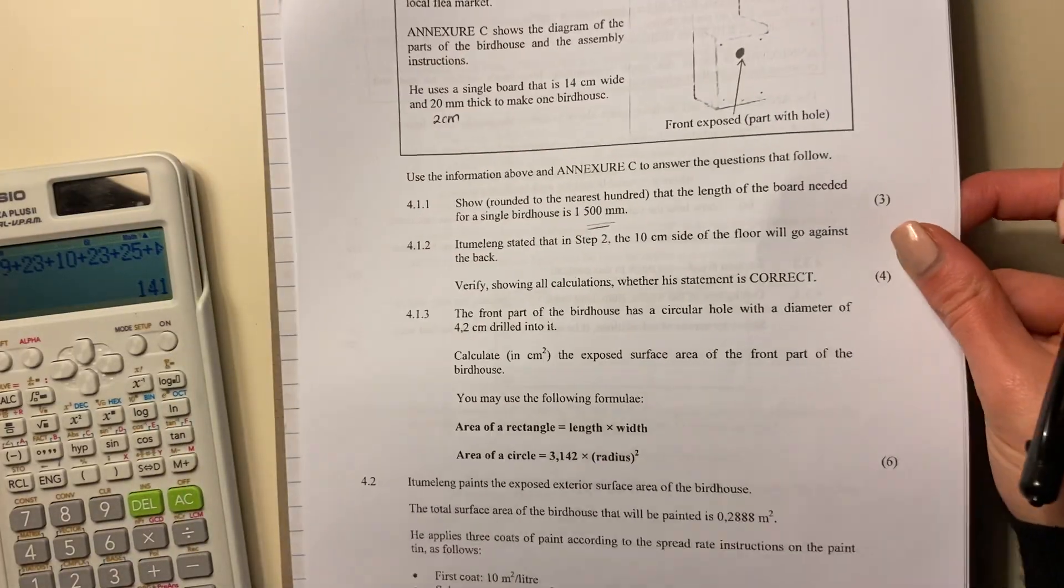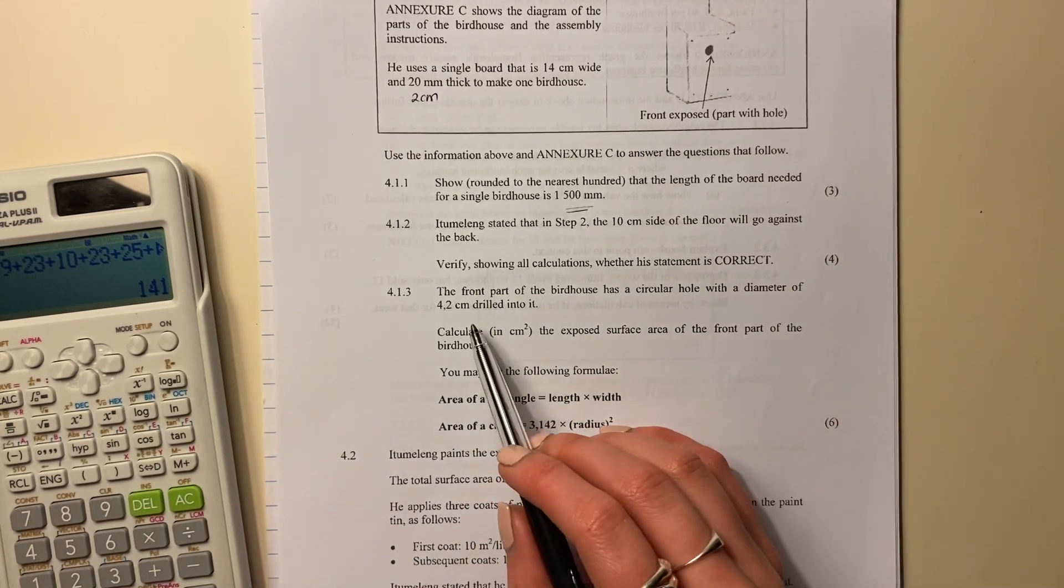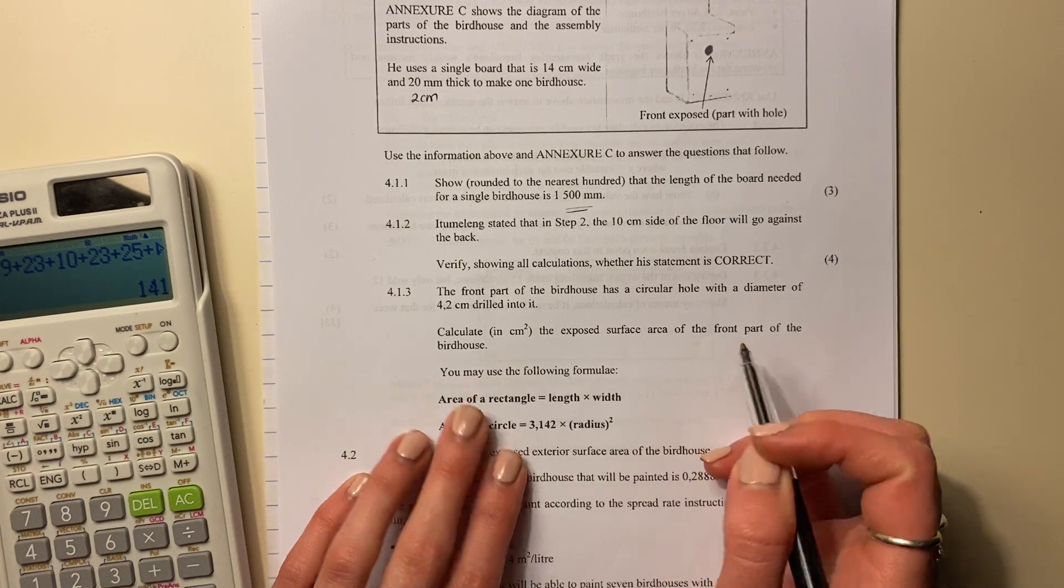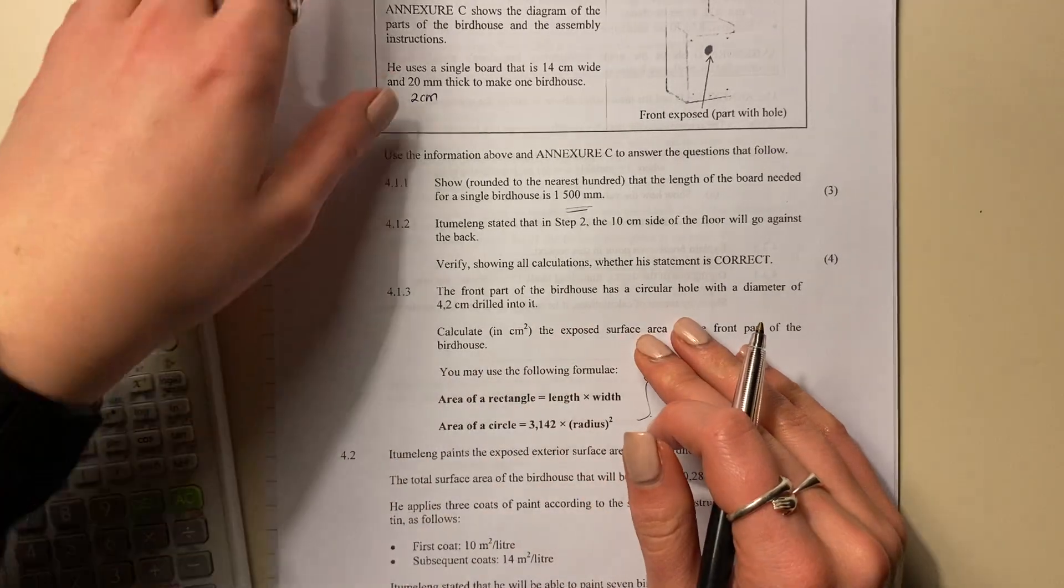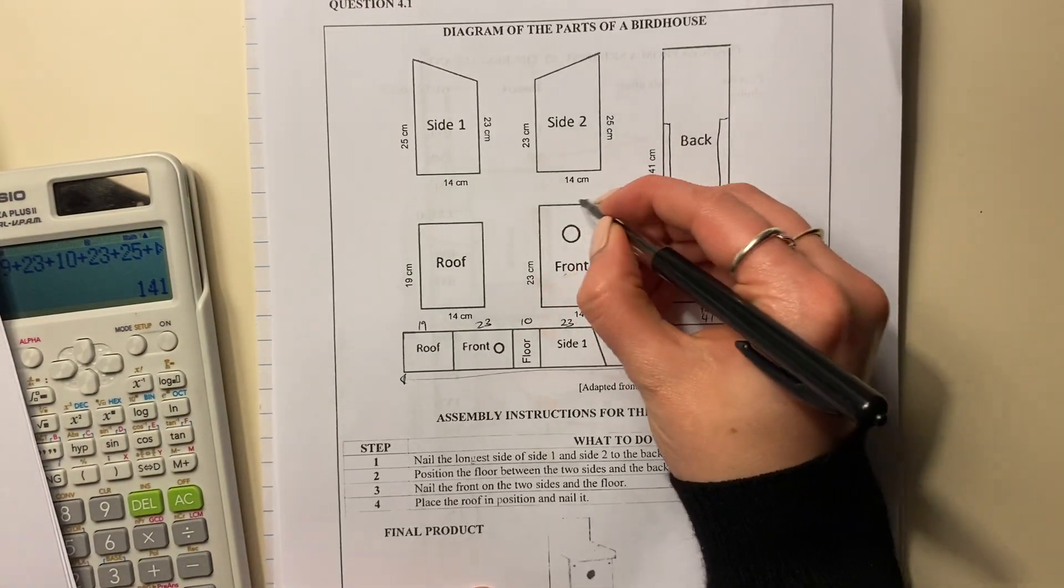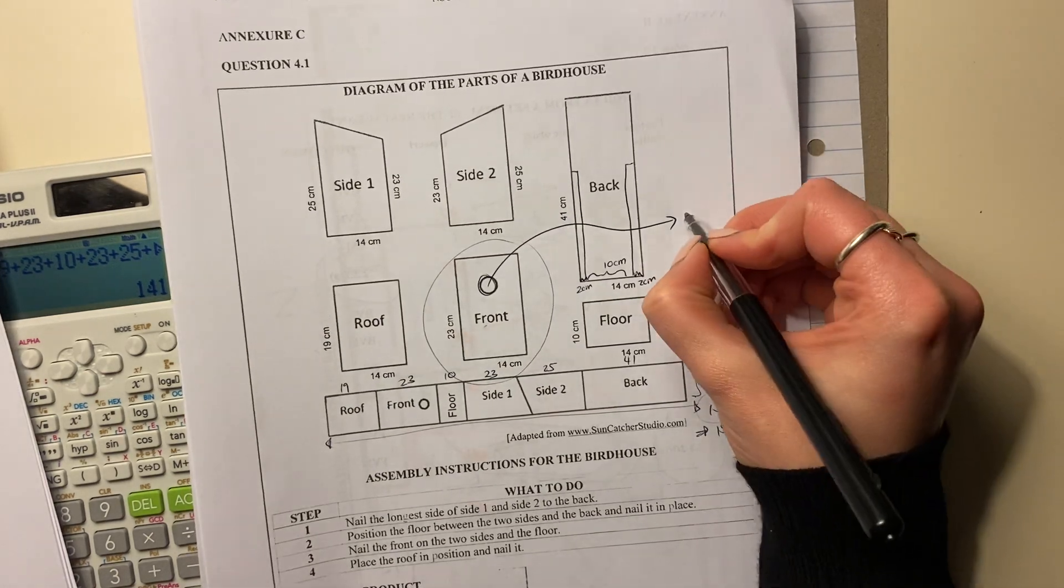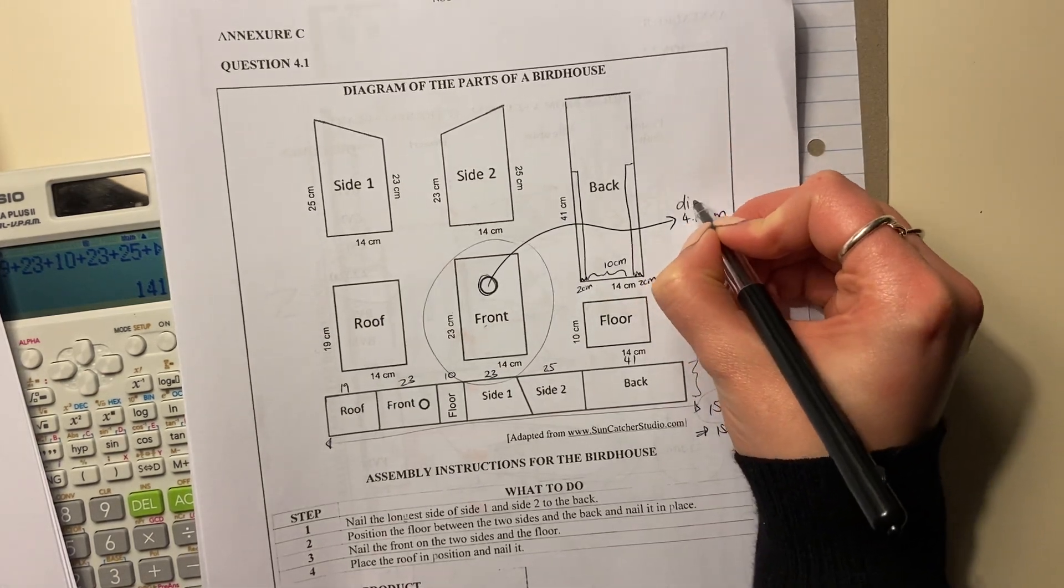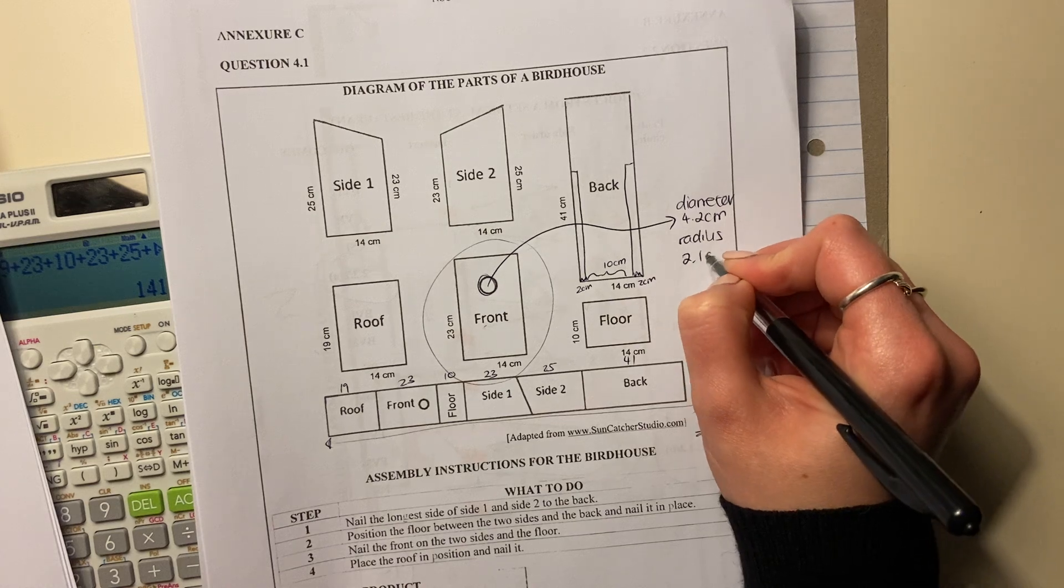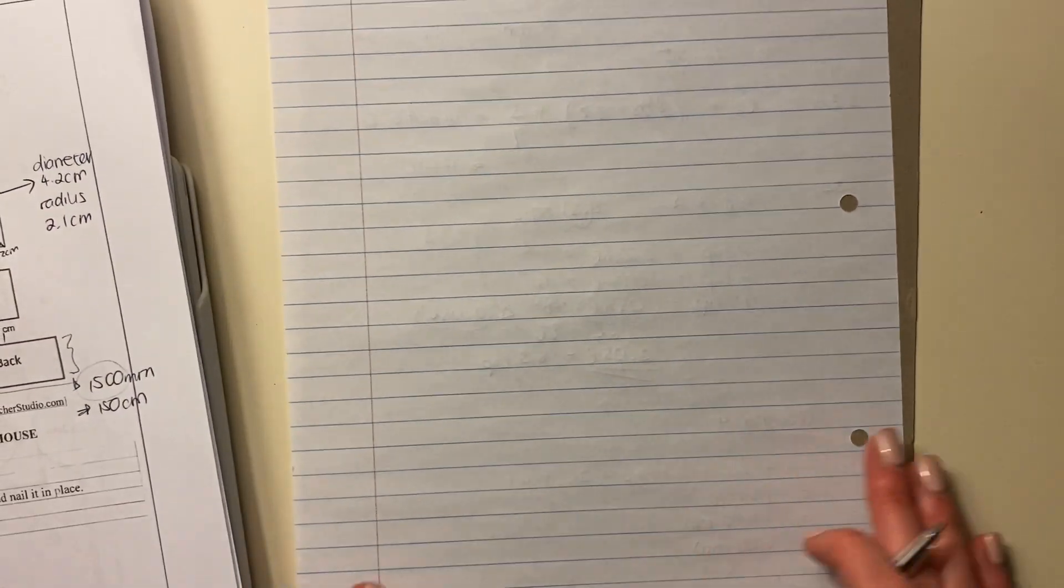All right, let's get our question, 4.1.3. The front part of the birdhouse has a circular hole with a diameter of 4.2 drilled into it. Calculate in centimeters the exposed surface of the front part of the birdhouse. You may use these formulas. So we're going to keep this on hand, but let's go back to our picture. So basically, it's saying, what's the surface area of this here? But we have to subtract that out. Now, that little bit there, we've been told that its diameter is 4.2 centimeters. That's its diameter. So what is its radius? Quite important. Its radius is going to be half of that, which is 2.1 centimeters.